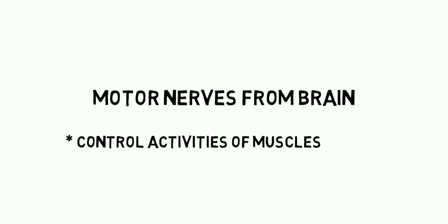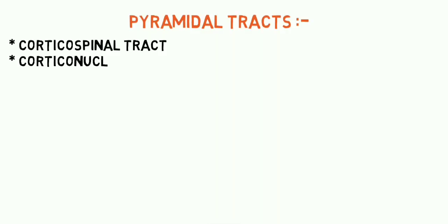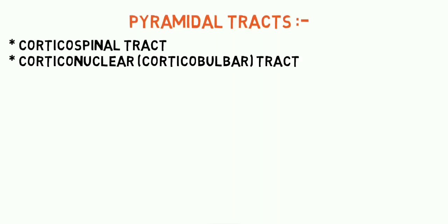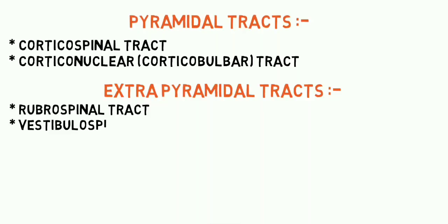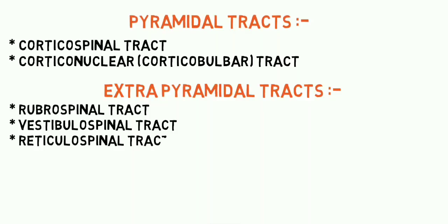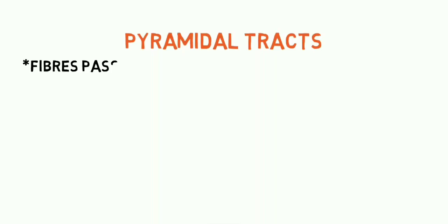The pyramidal tracts include the corticospinal tract and the corticonuclear or corticobulbar tract. The extrapyramidal tracts include the rubrospinal tract, vestibulospinal tract, reticulospinal tract, and tectospinal tract.